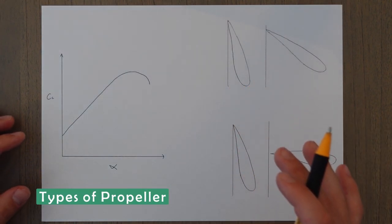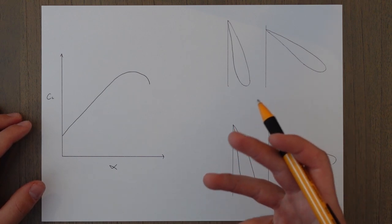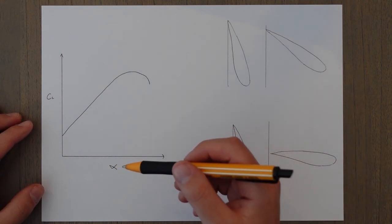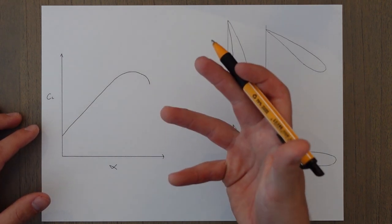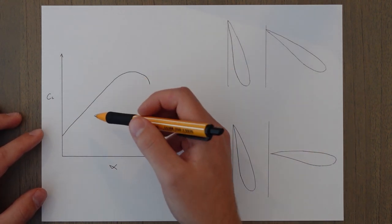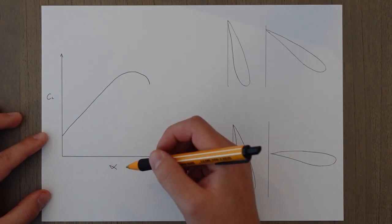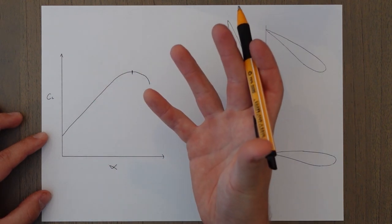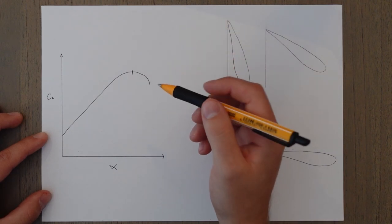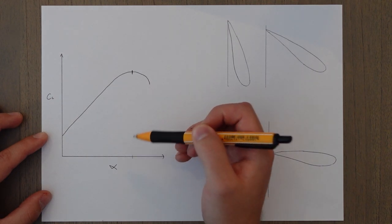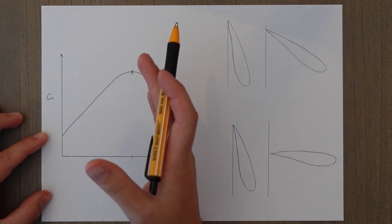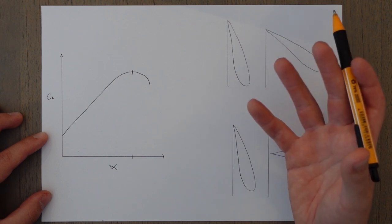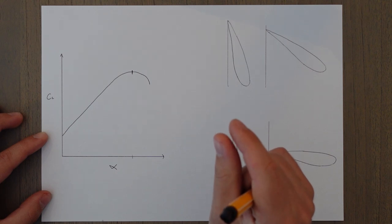In that previous example we were looking at a fixed pitch propeller, where the blade angle is always a fixed size. This means it can only operate at its highest efficiency at one specific RPM and one specific forward speed. If you think about it as a coefficient of lift versus alpha graph, you would produce that maximum efficiency value only at one specific angle of attack — which would only come at one specific forward speed and one specific RPM. So it can only be efficient for a very short period of time.